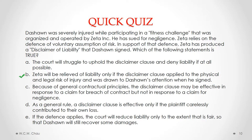C is a false statement. It says that because of general contractual principles, the disclaimer clause may be effective for a breach of contract claim but not for a negligence claim. In fact, a contractual disclaimer clause can be effective in response to both a breach of contract claim and a negligence claim. D says that as a general rule, a disclaimer clause is effective only if the plaintiff carelessly contributed to their own loss — that is not a general rule at all. E says that if the defense applies, the court will reduce liability only to the extent that is fair so that Deshawn will still recover some damages. That is a false statement because the defense of voluntary assumption of risk does not reduce liability — it eliminates liability on the part of the defendant entirely.